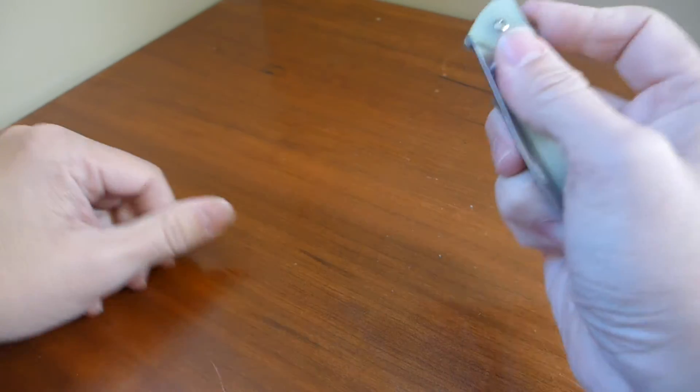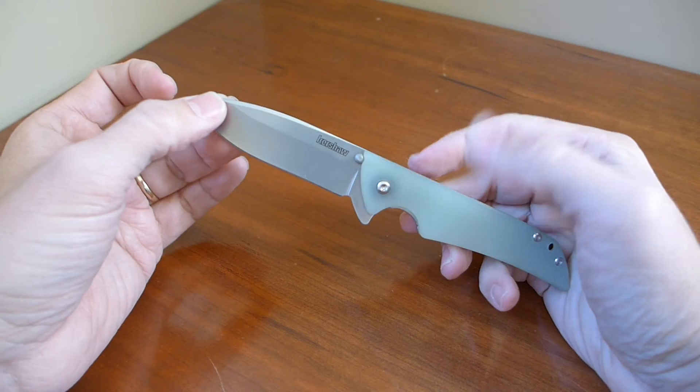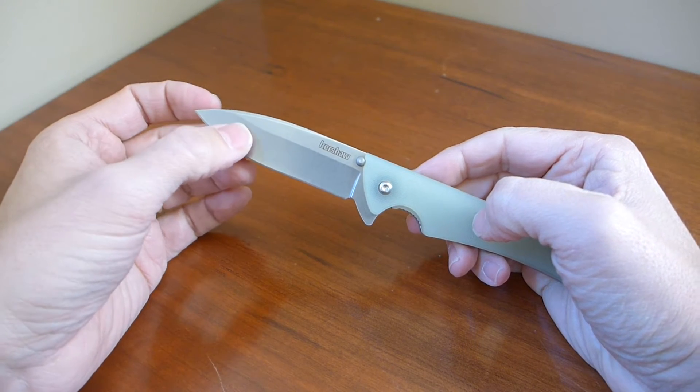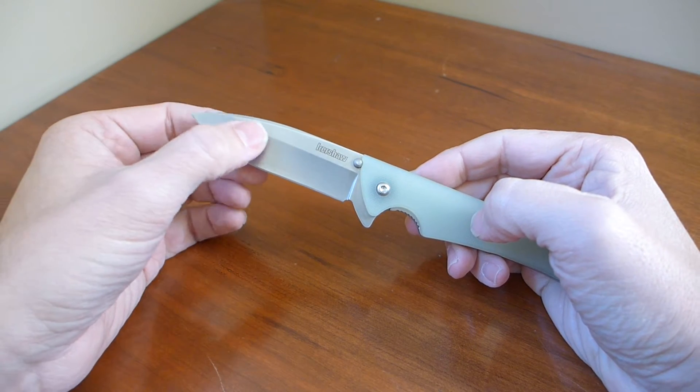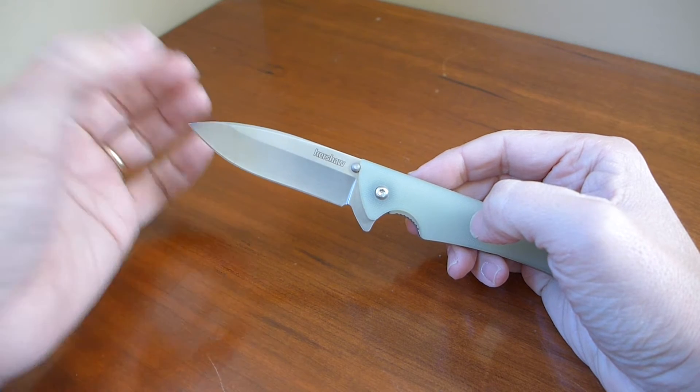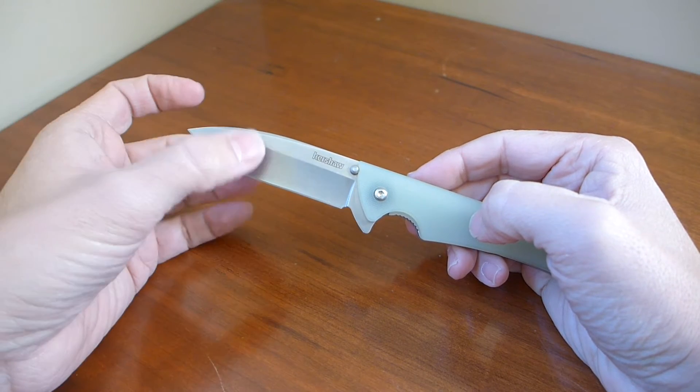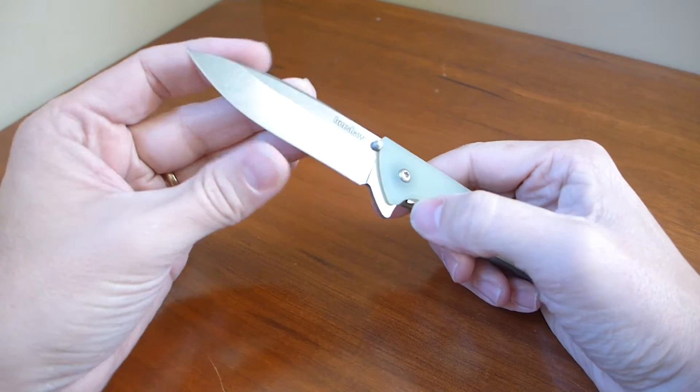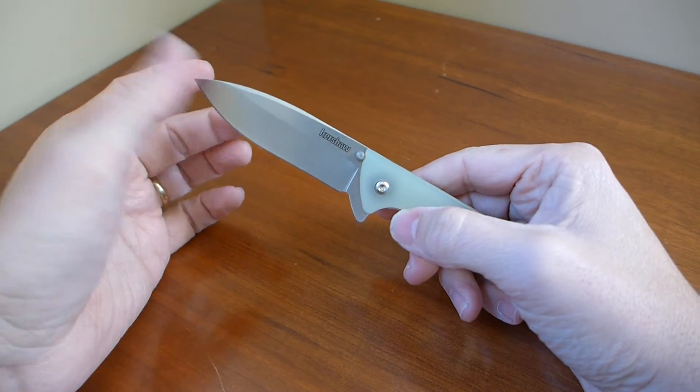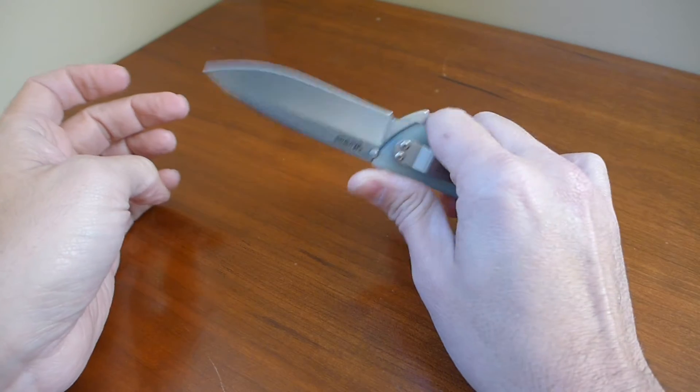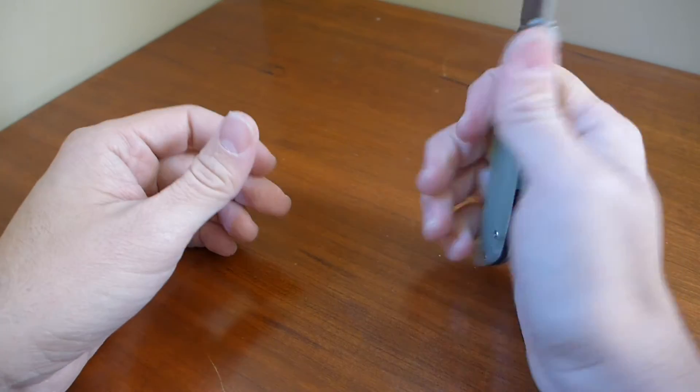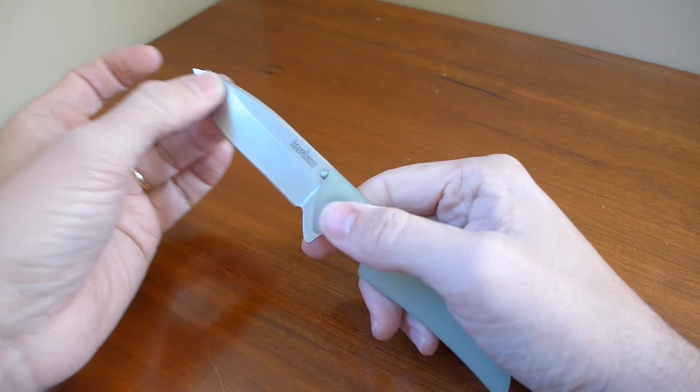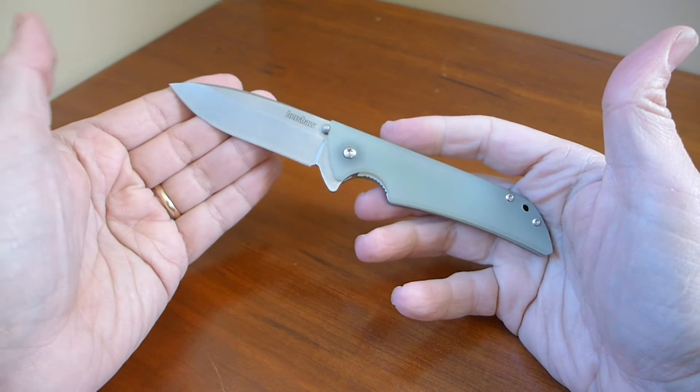How good is the Kershaw Skyline? It runs Sanvic 14C28N, which is probably the nicest and most advanced non-powder metallurgy steel available in cutlery. And I've peeled apples, sliced grapes, cut wood, whittled, opened boxes, done recycling and cardboard processing, and it is still in great shape.